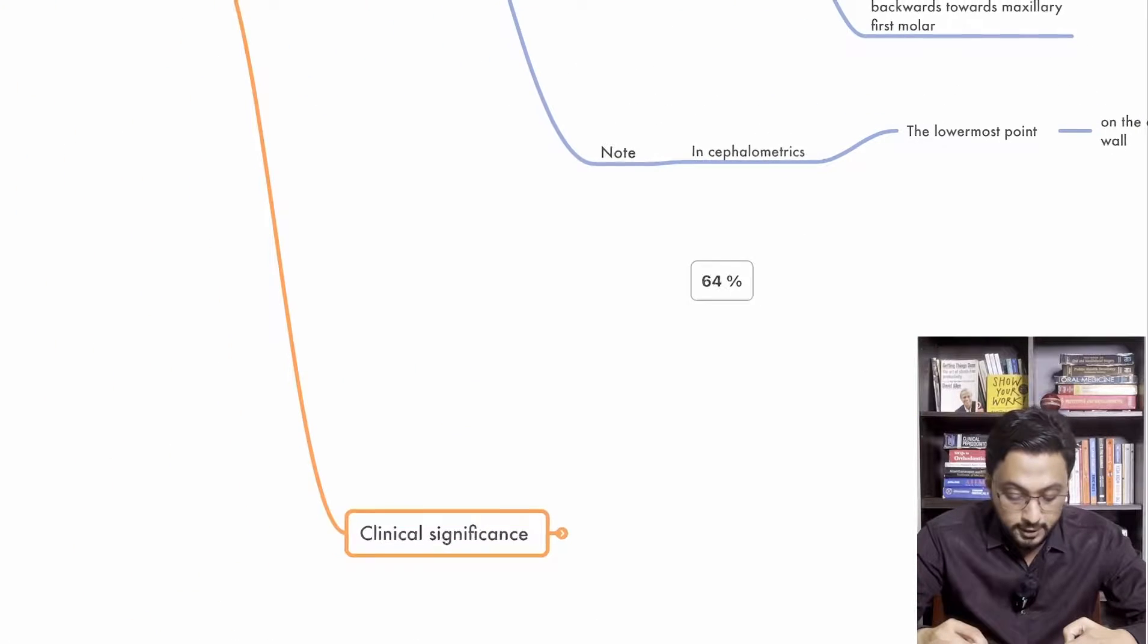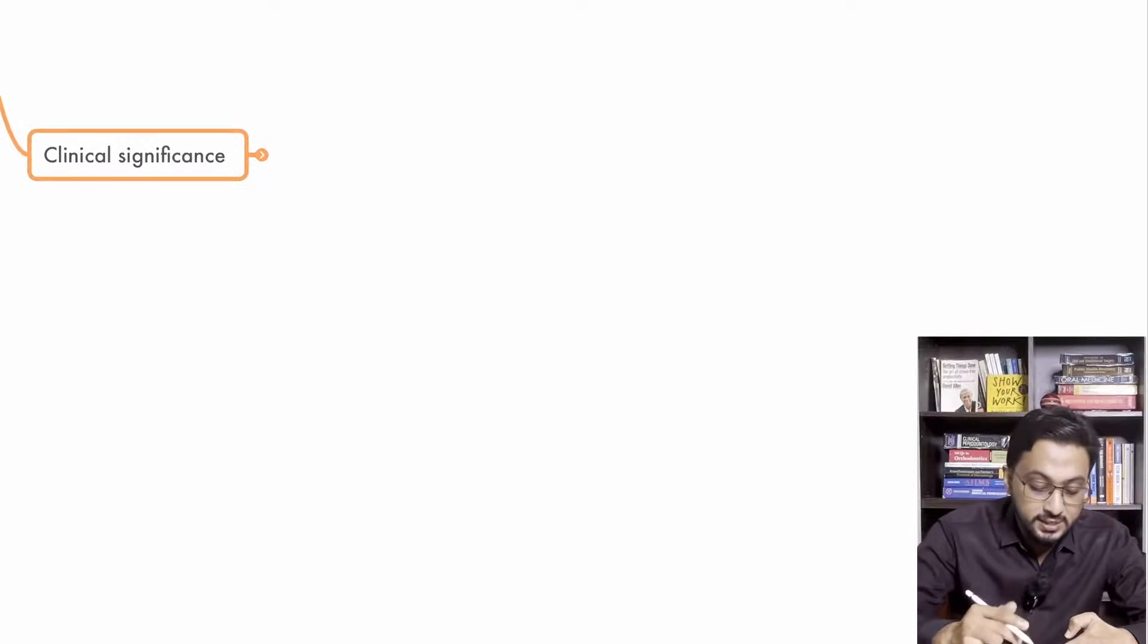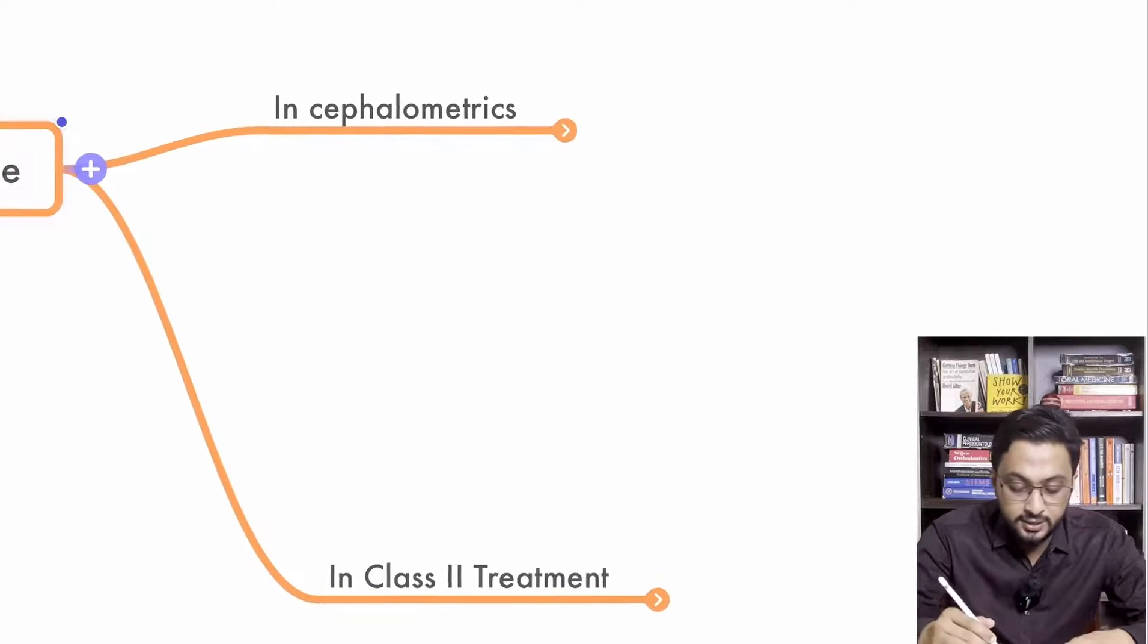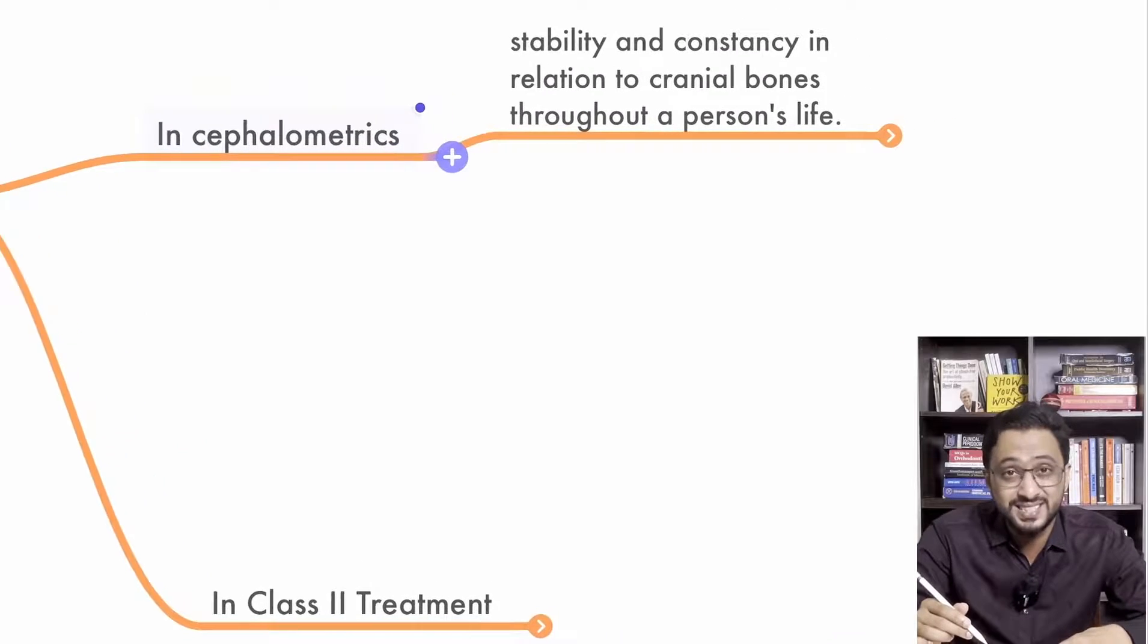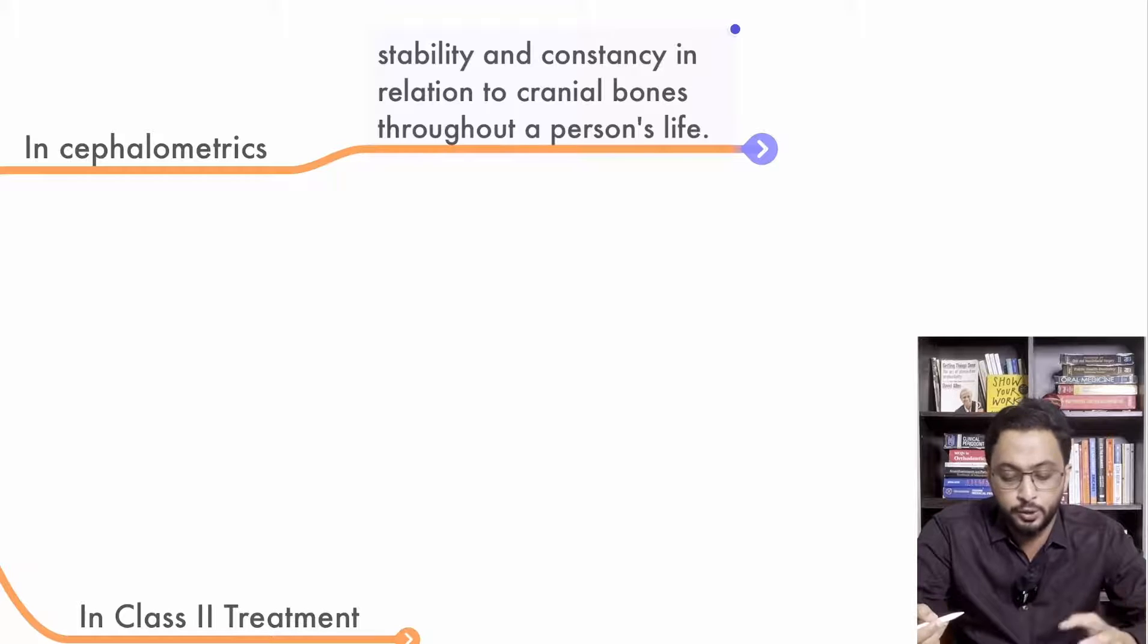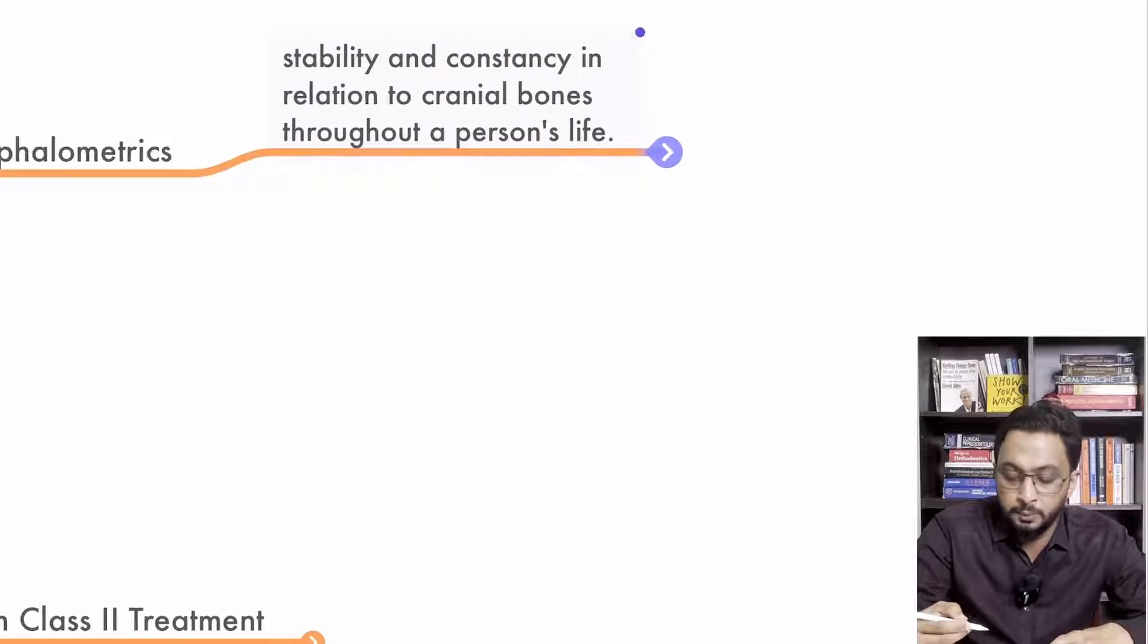Now if you go further, to understand the clinical significance of this Key Ridge. In cephalometrics, it is used to assess malocclusion because it is very stable and consistent. Stability and consistency in relation to cranial bones throughout a person's life.